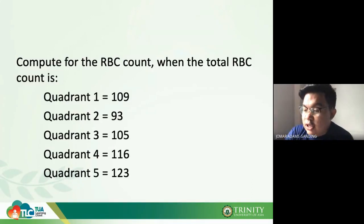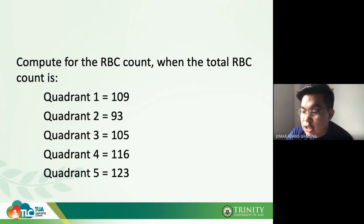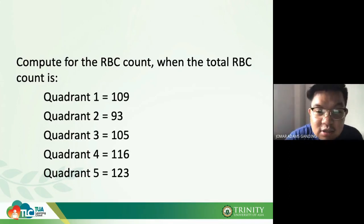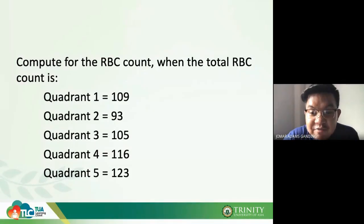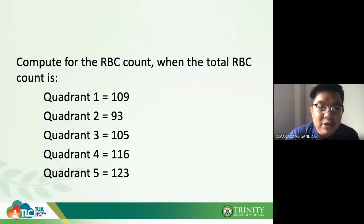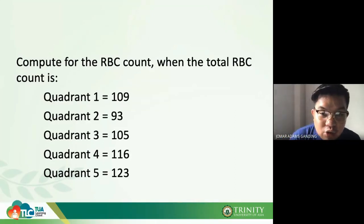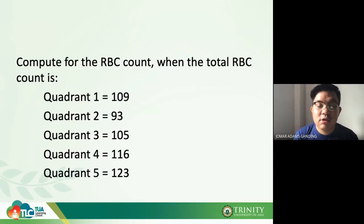Computing the example: 109 + 93 + 105 + 116 + 123 = 546 × 10 × 200 × 5. The answer is approximately 5,460,000 per cubic millimeter, which can also be expressed as times 10 to the 12th power per liter.